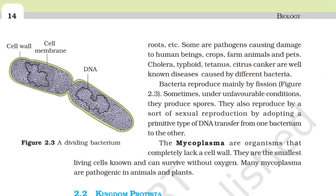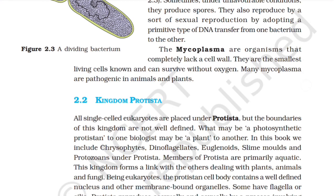Some bacteria are pathogens causing damage to human beings, crops, farm animals, and pets. Cholera, typhoid, tetanus, and citrus canker are well-known diseases caused by different bacteria. Bacteria reproduce mainly by fission, and sometimes under unfavorable conditions they produce spores. They also reproduce by a sort of sexual reproduction by adopting a primitive type of DNA transfer from one bacterium to another. Mycoplasmas are organisms that completely lack a cell wall. They are the smallest living cells known and can survive without oxygen. Many mycoplasmas are pathogenic in animals and plants.